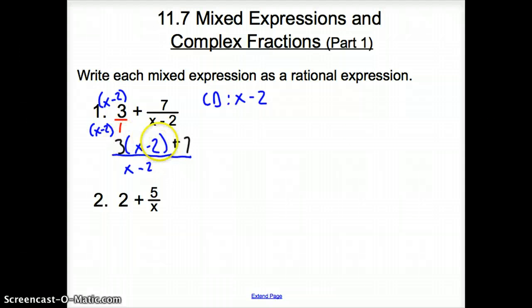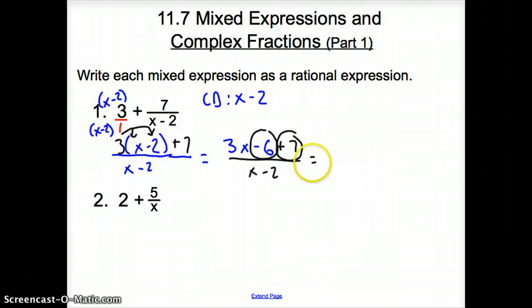So now let's go ahead and simplify. I need to do what with this 3? I need to distribute that 3. So this guy is going to equal 3x minus 6, and then plus 7, all over x minus 2. Well, let's keep simplifying. What can we simplify? We can simplify this guy with this guy. So we get 3x plus 1 all over x minus 2 for our simplified rational expression.